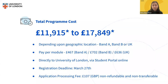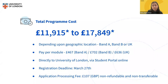Tuition is based on your residency, not nationality, and is pay per module. There are different fees for Band A, Band B, and the UK — you can check the university website to find your country band. For Band A, the total indicated cost is £11,915 with each module at £467. For Band B, the total is £17,849 with each module at £702. For the UK, the total is £16,203 with each module at £636.